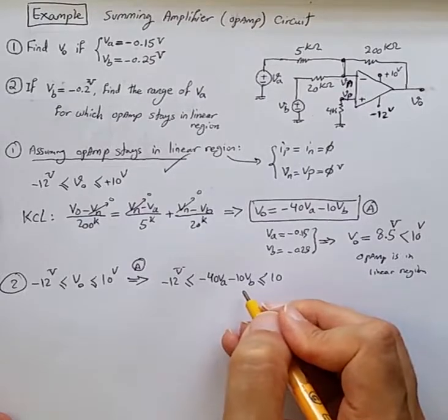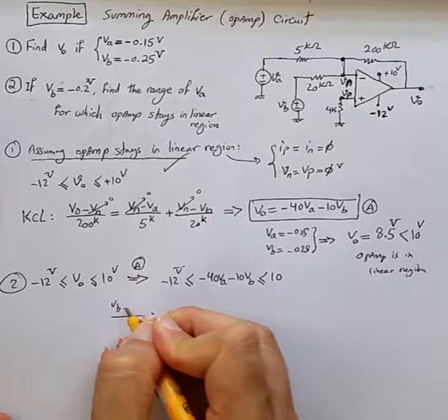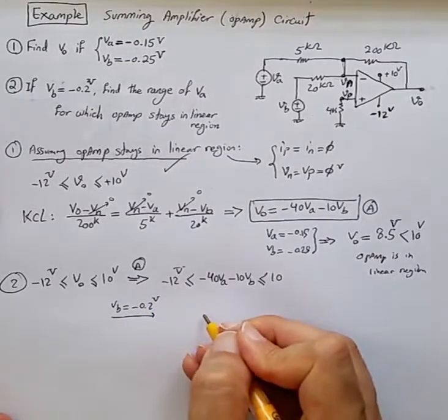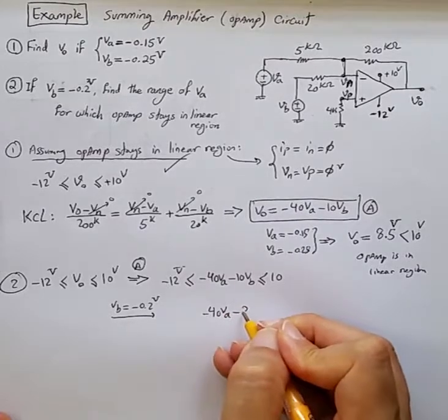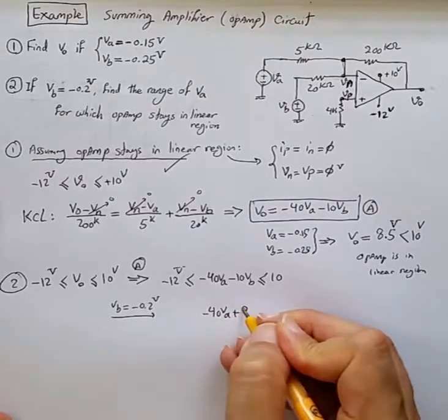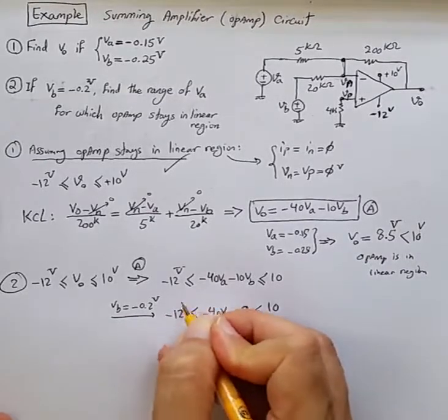So given that VB is minus 0.2 volts, we can say minus 40VA plus 2 is less than or equal to 10 and more than minus 12.